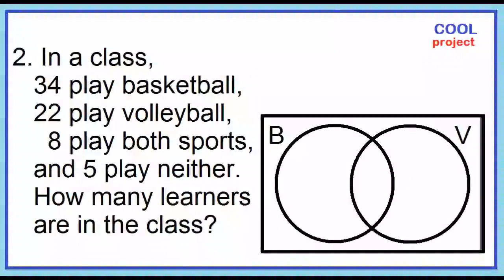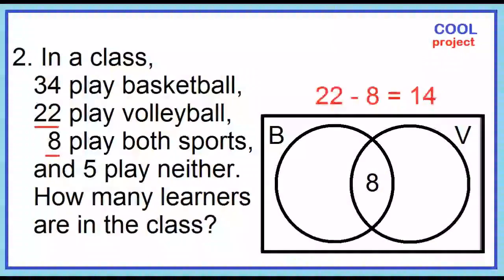Let B be the set of basketball players, and let V be the set of volleyball players. Start with the intersection of sets B and V — 8 play both sports. Place 8 in the area where B and V overlap. Next, 22 play volleyball. Since we already have 8, 22 minus 8 is 14. Place 14 in circle V.